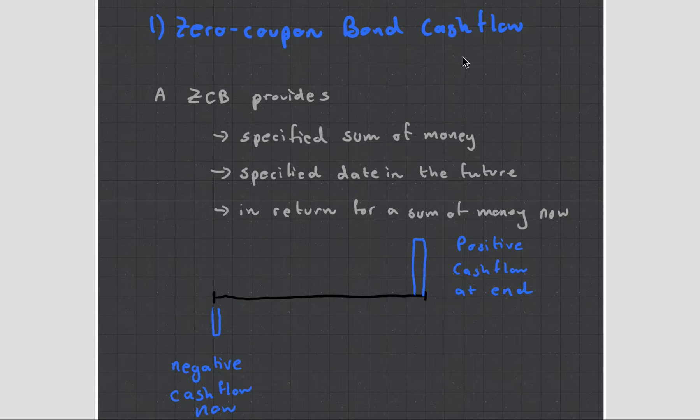So, zero coupon bond, very important but very easy to understand. You have a negative cash flow in the beginning, you wait some time and then you get a cash flow at the end of that period which is normally a little bit bigger.